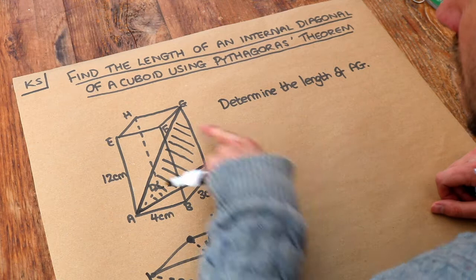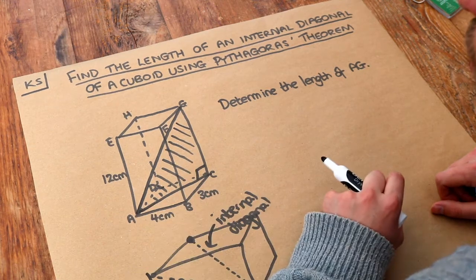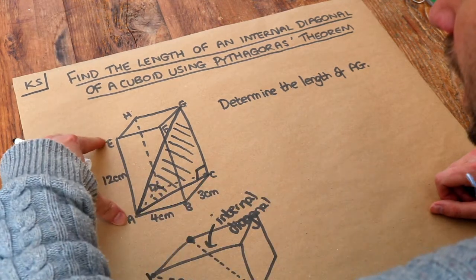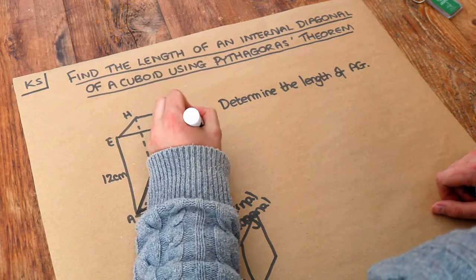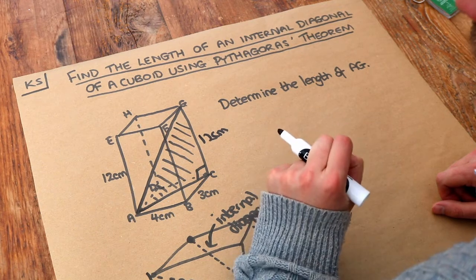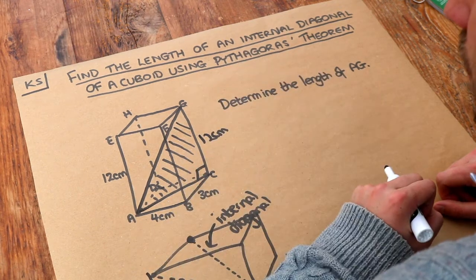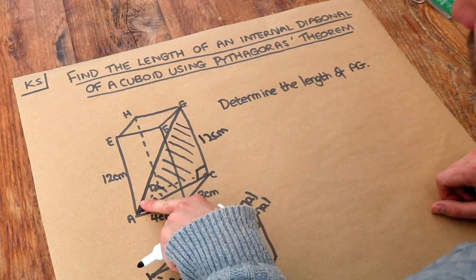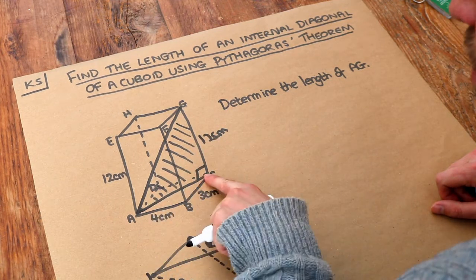Now at the moment it's quite difficult to find AG because we only know one of the lengths. We know that EA is 12 centimetres so CG is also 12 centimetres, the height of the cuboid. But we need to know a second length of the right angle triangle to find the third. So if we were trying to find AG we know the 12 but we also need to find the AC.